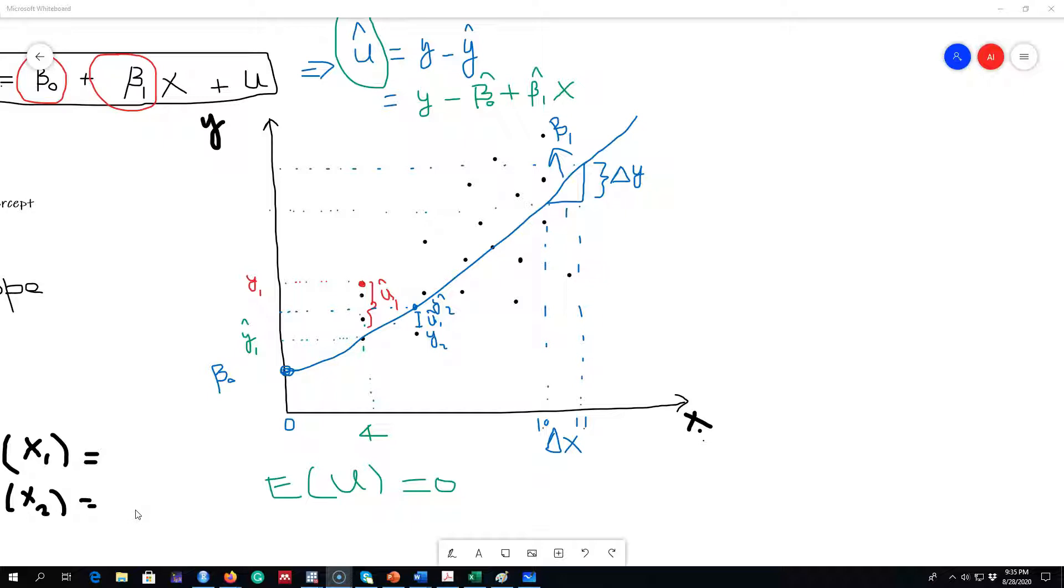I talked about the beta 0 and beta 1 parameters where beta 0 represents the intercept and beta 1 represents the slope parameter of that relationship. We may be more interested in this beta 1 parameter because it is showing us if X changes by one unit, the Y will change by beta 1.